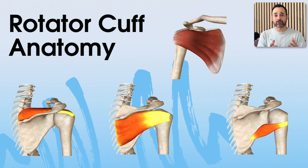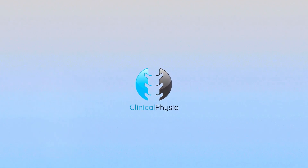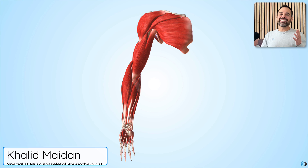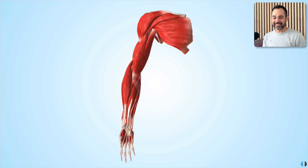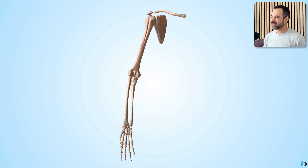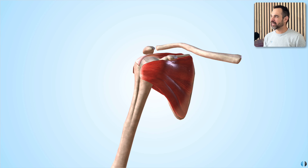The rotator cuff is one of the most important parts of the shoulder in terms of anatomy and function. In this video, we'll take you through the 3D anatomy of the rotator cuff. Hey guys, Khalid here. Welcome back to Clinical Physio. We're going to remove some of the key external muscles at the shoulder so we can focus in on the rotator cuff.